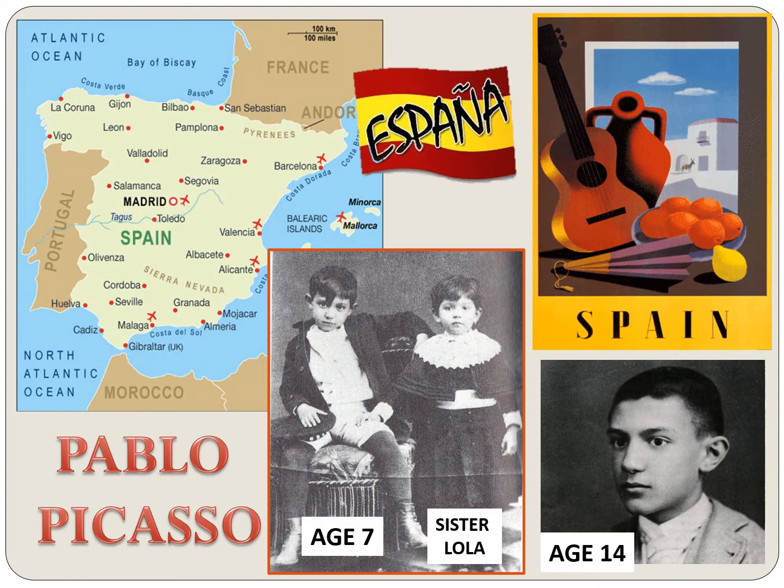Pablo Picasso was born in Spain. As a child, Picasso could draw before he could even write or even talk. He would sit happily drawing for hours. His drawing became so good that he went to an art school when he was only 13 years old. He was given drawing exercises and he finished them in only a few hours — it took much older students months to do the same exercises.